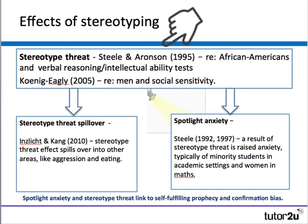The most well-known effect of stereotyping is stereotype threat, researched by Steele and Aronson, who looked at African Americans who felt threatened when told verbal reasoning tests would strongly measure their intellectual ability. Koernick and Eagly did the same thing with men — an unusual study, since most research into stereotype threat has focused on minority groups or women. Koernick and Eagly showed that men are just as sensitive to stereotyping and stereotype threat as women and minority groups are.